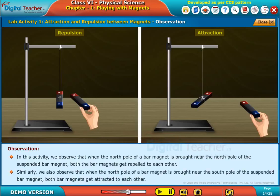Similarly, we also observe that when the north pole of a bar magnet is brought near the south pole of the suspended bar magnet, both bar magnets get attracted to each other.